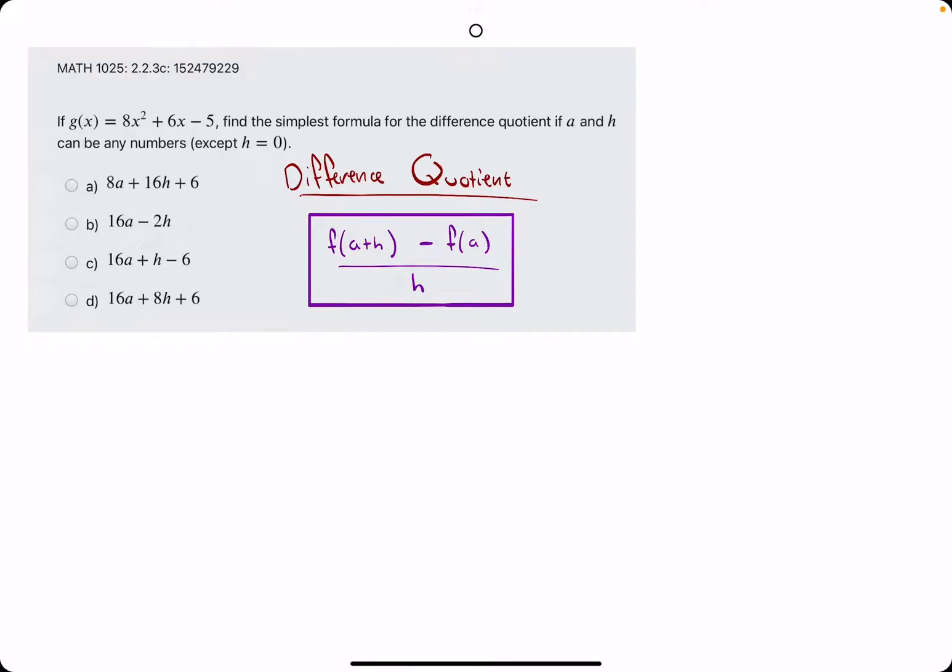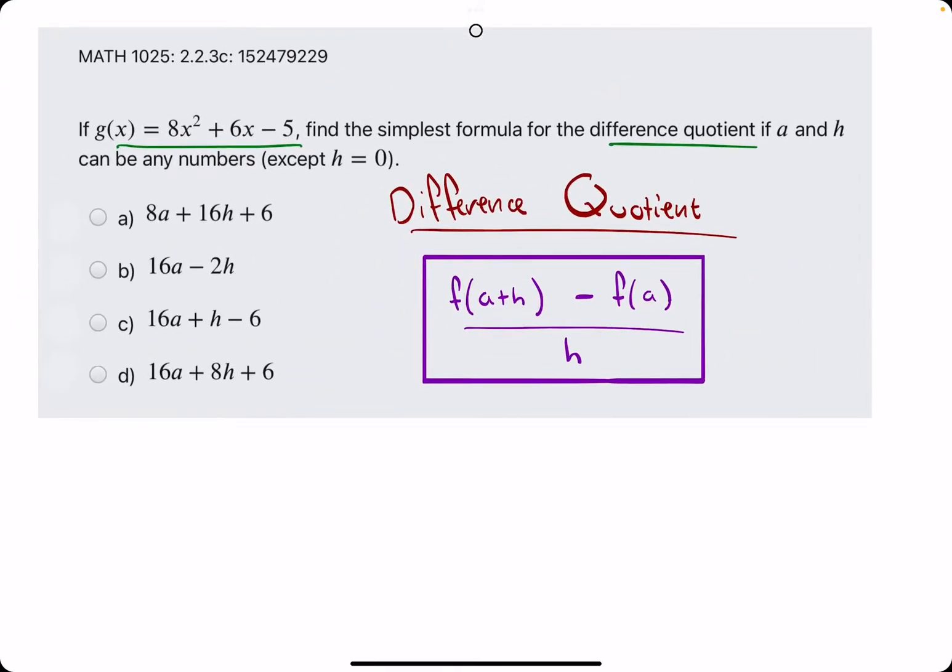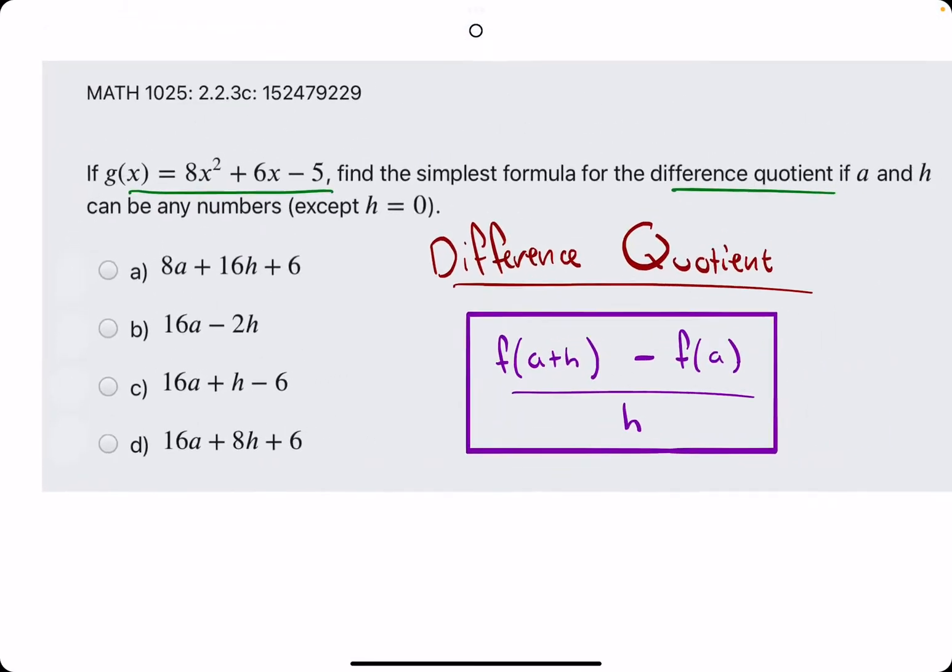Okie dokie. In this problem, we are also finding the difference quotient for some function, but in this case, they don't give us a or h values. So, we're basically trying to find a difference quotient expression in terms of a and h.